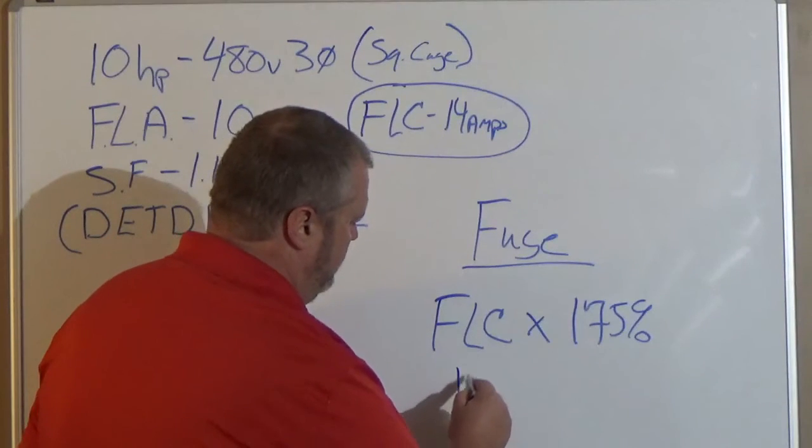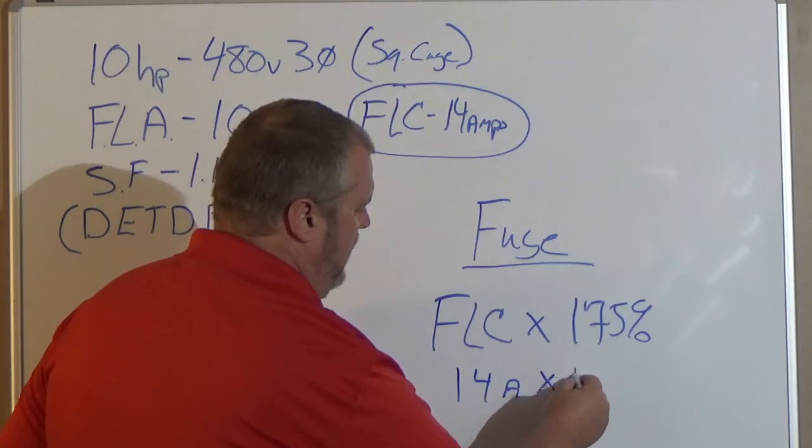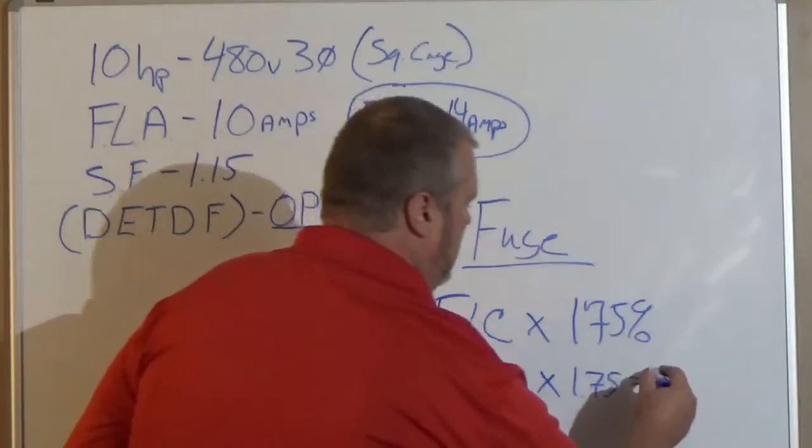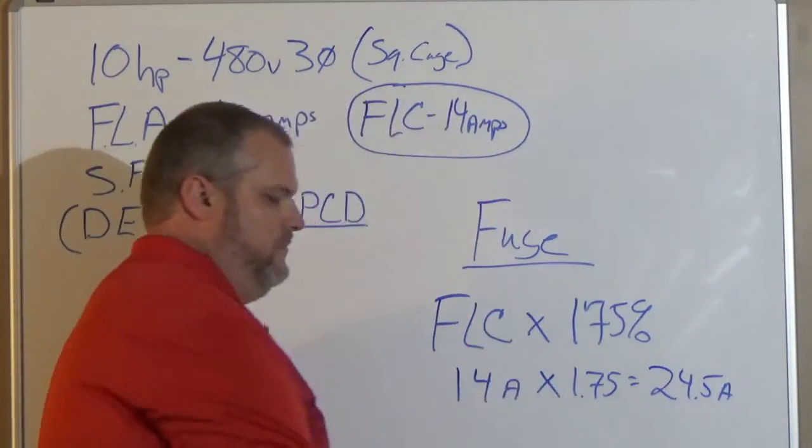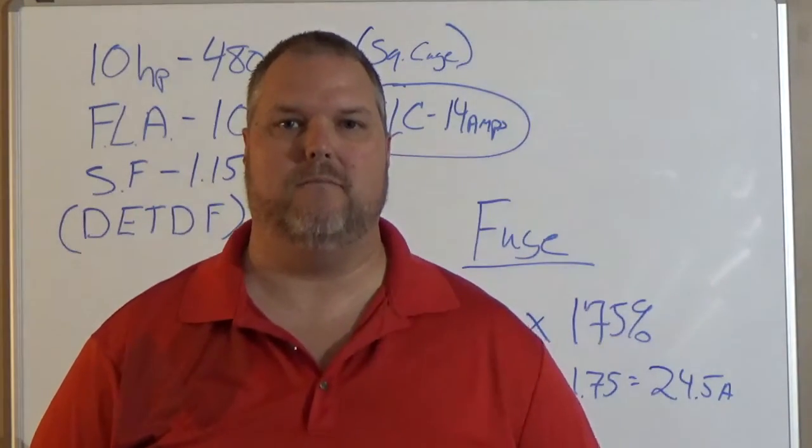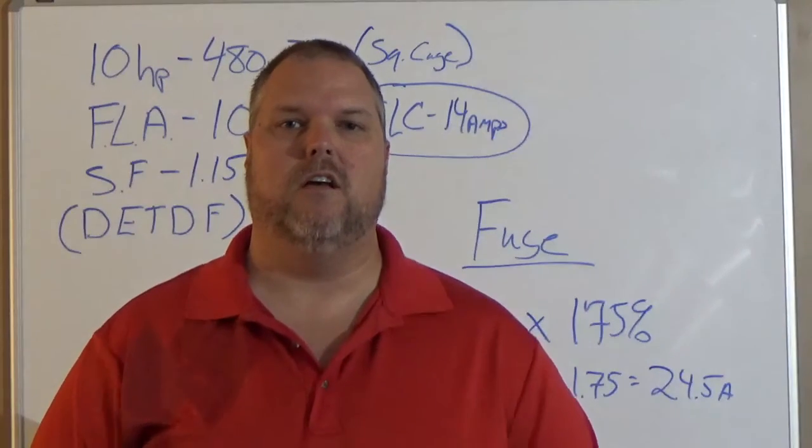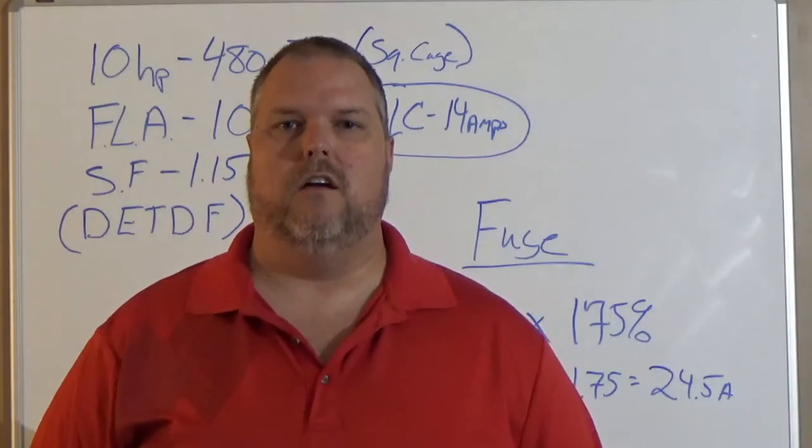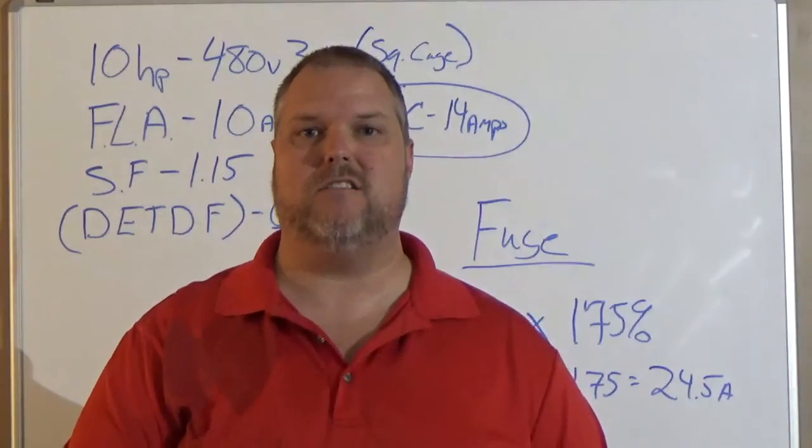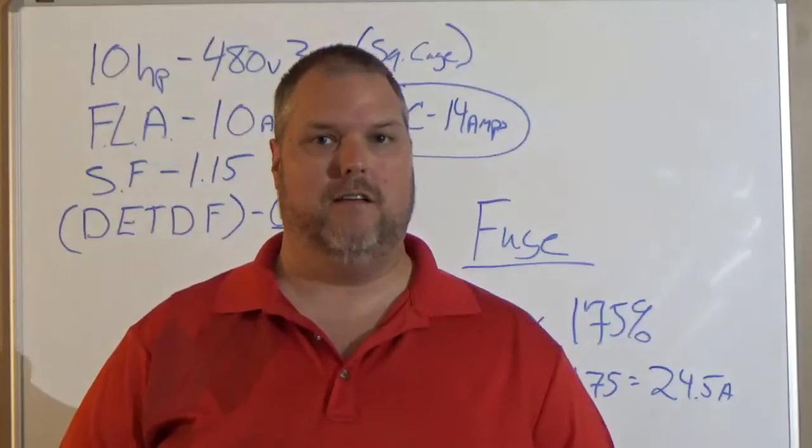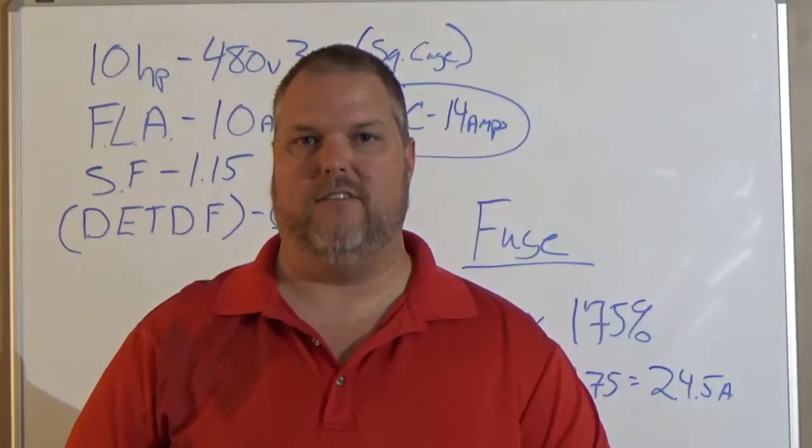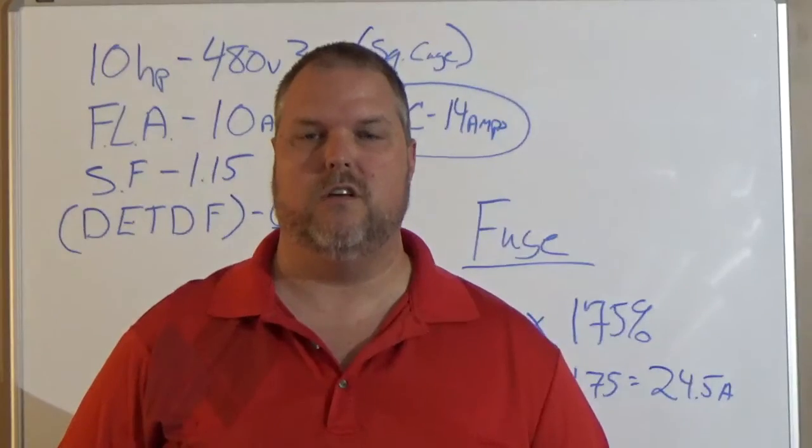Now, they don't make a breaker or a fuse that is 24.5 amps. So what we have to do is we have to go to the next available size. How do you find the next available size? Take yourself over in the code book to article 240.6. It's going to tell you that 25 is our next available size. We don't want to go back to 20 because we're looking at four and a half amps. That's a lot of amps. So let's just go up one more and let's get a 25 amp fuse. So we're using a dual element time delay fuse that is 25 amps.